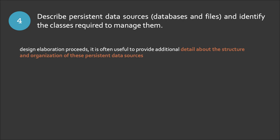Step number four: we need to describe the persistent data sources — like databases and files — and identify the classes required to manage them. These are actually the control classes. Since we are done elaborating the data structures from the previous steps, here we will elaborate the structure and organization of these persistent data sources — in other words, elaborating our databases.